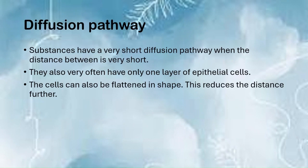Looking at diffusion pathways: substances have a very short diffusion pathway when the distance between surfaces is very short. Exchange surfaces very often have only one layer of epithelial cells, so the distance of the exchange surface is really short. The cells can also be flattened in shape to reduce the distance further. One key factor that contributes to rates of diffusion is the distance between the exchange surface, and different organisms minimize this distance through different adaptations.